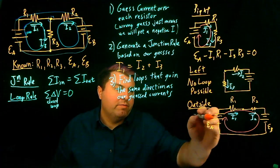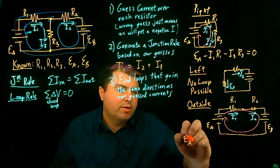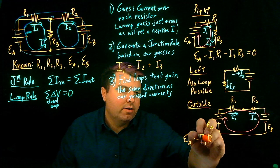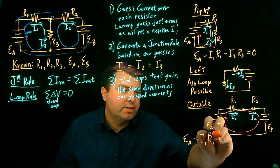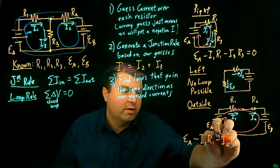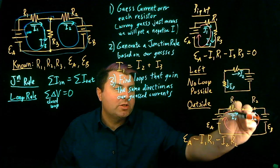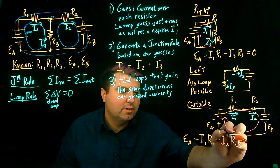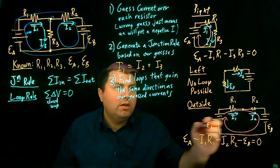And if we read this off, then we get positive battery A. It's a resistor, so minus I1 R1. It's a resistor, so minus I2 R2. And then now our loop is going against the battery. It's going from big plate to small plate, so we get minus EB equals zero.